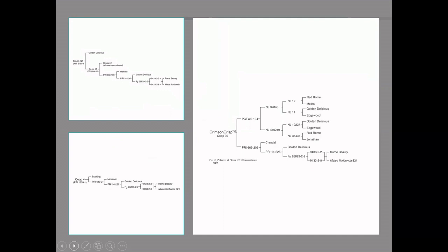Next we'll cover three apples from the PRI program. The PRI program was a genetics program founded by three different universities, Purdue, Rutgers and Indiana, in conjunction with the USDA.